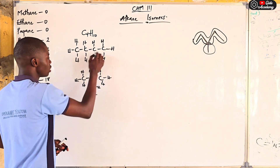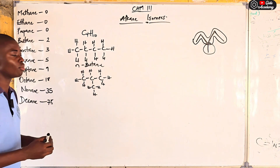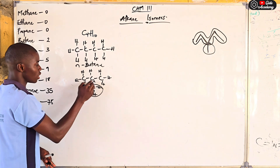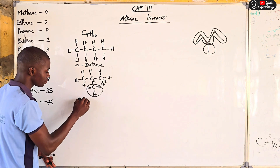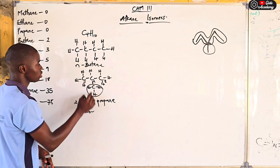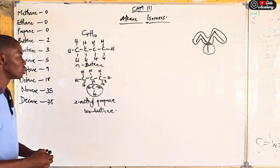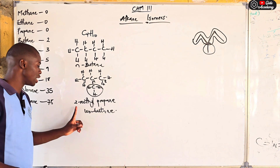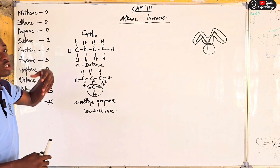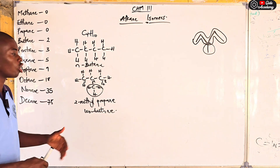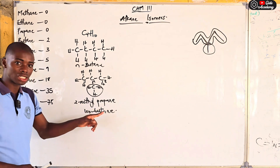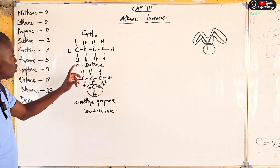To name these structures: the straight-chain four-carbon structure is called normal butane (n-butane). For the branched one, the position of the methyl group is at carbon two — carbon one, carbon two, carbon three — so you call it 2-methylpropane, because the longest straight chain has three carbons. You can also call it iso-butane. As a quick check: propane is three carbons, methyl adds one, so three plus one equals four — confirming it is an isomer of butane.